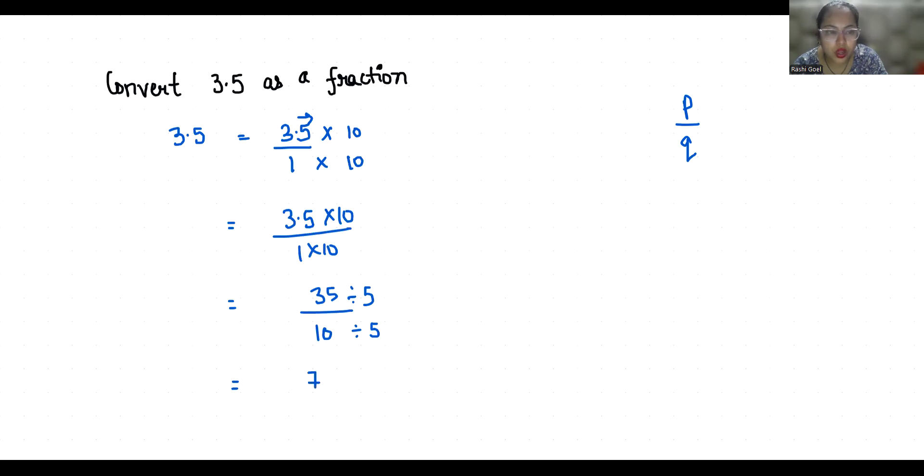So 3.5 as a fraction is 7 by 2. I hope it's clear and you find it useful. Please give us a thumbs up and subscribe to my channel. See you in more upcoming videos!